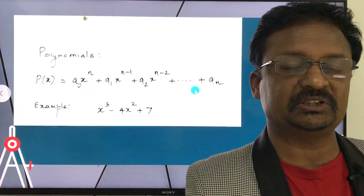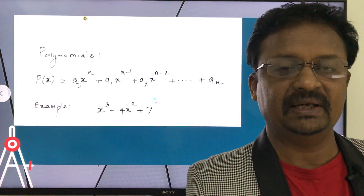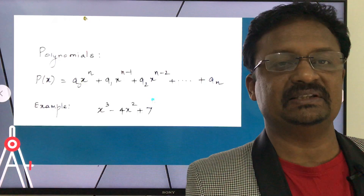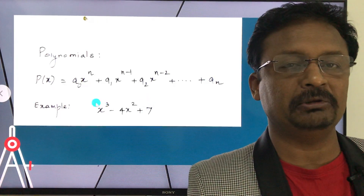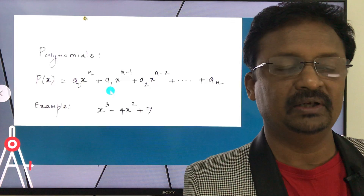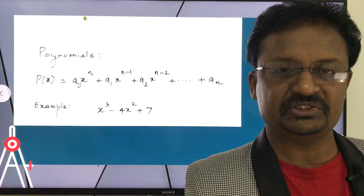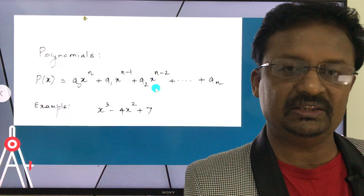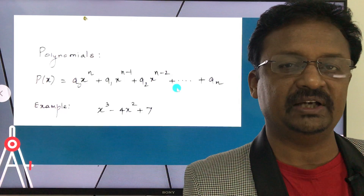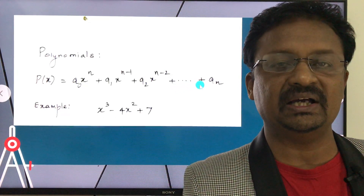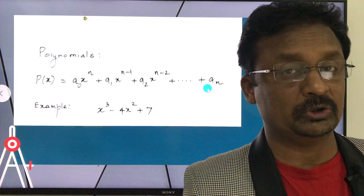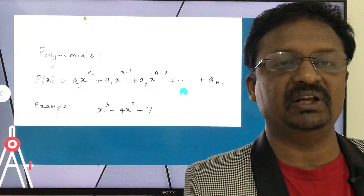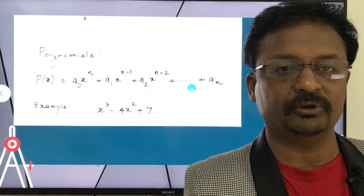This polynomial is expressed as P(x). The standard form is P(x) = a₀xⁿ + a₁xⁿ⁻¹ + a₂xⁿ⁻² + a₃xⁿ⁻³ + ... + aₙ, where aₙ is the constant term. You can also use more than one variable in this polynomial form.